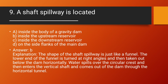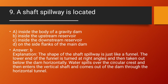Question number 9: A shaft spillway is located inside the upstream reservoir. Answer: inside the upstream reservoir. Explanation: The shape of a shaft spillway is just like a funnel. The lower end of the funnel is turned at right angles and taken out below the dam. Water spills over the circular crest, then enters the vertical shaft and comes out of the dam through a horizontal tunnel.